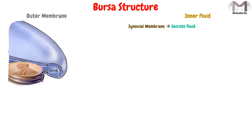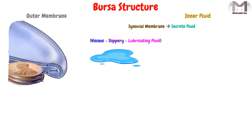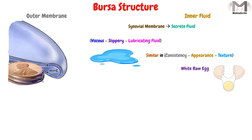This synovial membrane will secrete a fluid, which is a viscous, slippery, and lubricating fluid, similar in consistency, appearance, and texture to the white part of a raw egg. This fluid will fill the Bursae sac and will lubricate the internal surface of the sac.